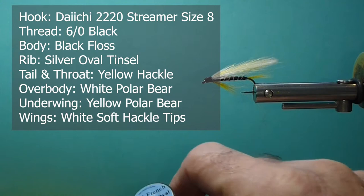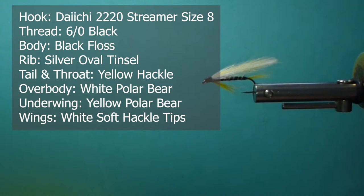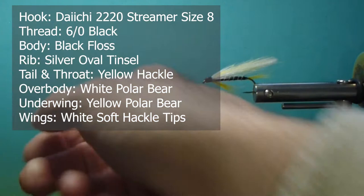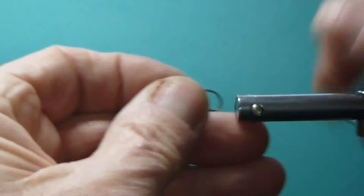We're going to use some yellow and white polar bear, we're going to add that into this pattern. The tail and the throat is some yellow hackle. And the wings will be some small wings down here on the hen neck. So we'll get a hook in the vise and tie one of these up in black ghost.